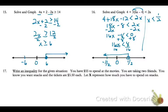Alright, at number 17, we're going to write an inequality for this situation. So you have $55 to spend at the movie. That's your budget, your limit. You're taking two friends, and you know you want snacks. And the tickets are $5.50 each.